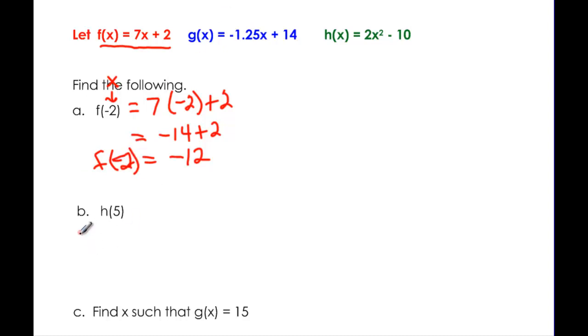We have h(5). So I want the h function over here, and wherever I see an x, I'm going to put 5. So I have 2 times 5, and that x is being squared, so I have to square my 5, minus 10. And this is 2 times 5 squared would be 25 times 2, or 50, minus 10. So h(5) is equal to 40.